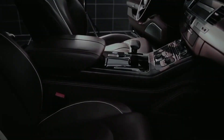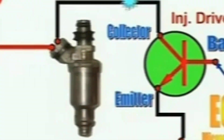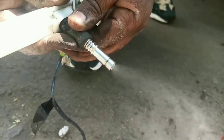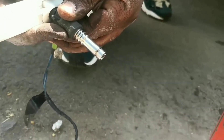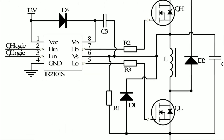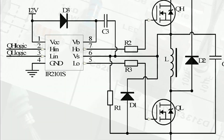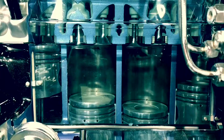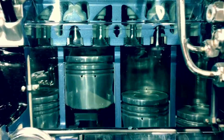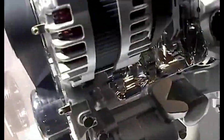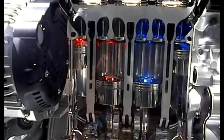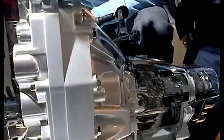In automotive engineering, the driver circuit of injectors refers to the electronic circuitry responsible for controlling the injectors in an engine's fuel delivery system. This circuit typically includes components such as injector drivers, which are specialized circuits designed to precisely control the timing and duration of fuel injection into the engine cylinders. The driver circuit ensures that the injectors receive the correct signals to deliver fuel in the right amount and at the right time, known as atomization of fuel, optimizing engine performance, fuel efficiency, and emissions.